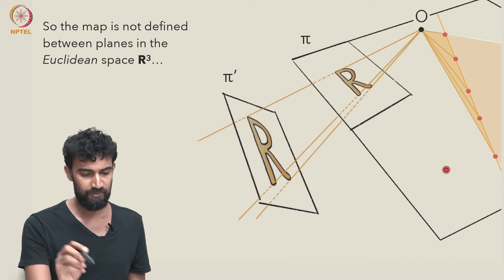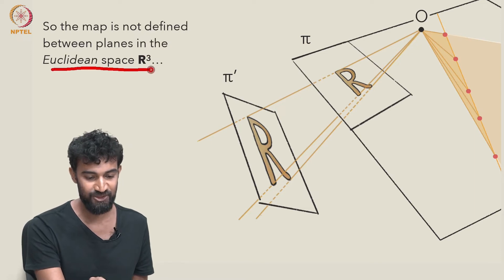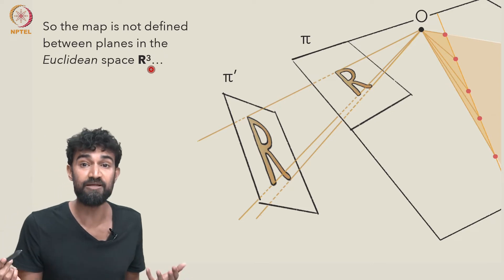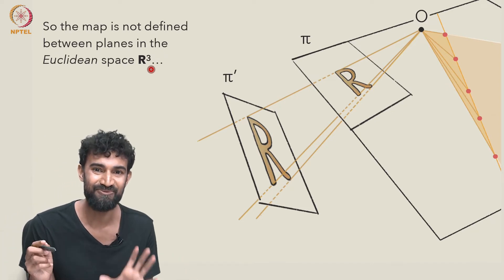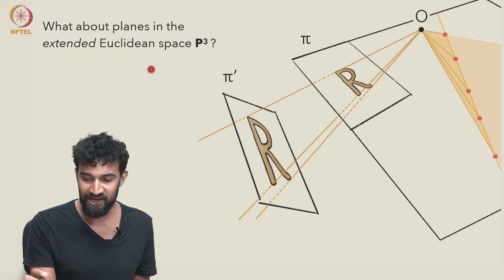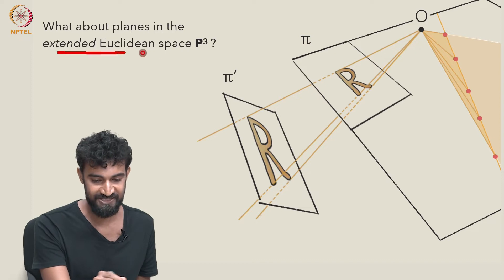The map is not really defined between planes in Euclidean space. π and π' are two planes in Euclidean space, and unfortunately, the perspectivity map is not really well defined as we've given it. But what about if we extend our space to P3? We include points at infinity.